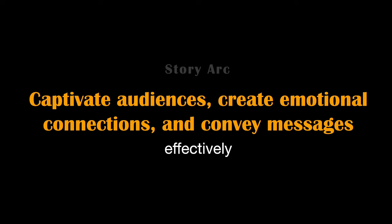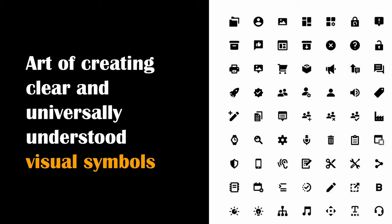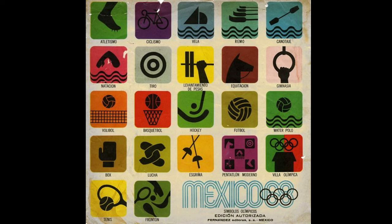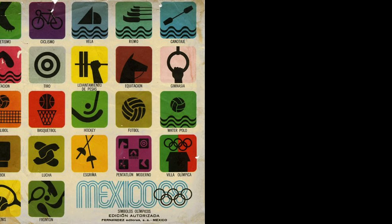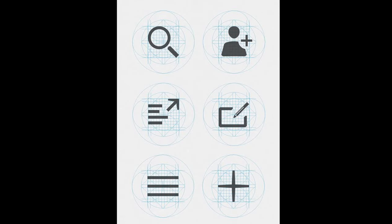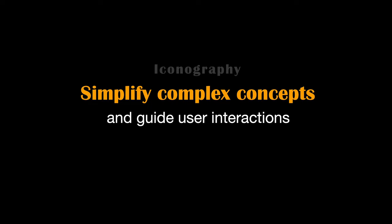Iconography is the art of creating clear and universally understood visual symbols. It is needed for effective communication and design, offering a concise and intuitive way to convey ideas or actions. For example, the hamburger icon representing a menu in a mobile app is a universally recognized symbol that simplifies navigation, ensuring a seamless user experience. Designers use icons extensively in user interfaces, signage, and branding to simplify complex concepts and guide user interactions.